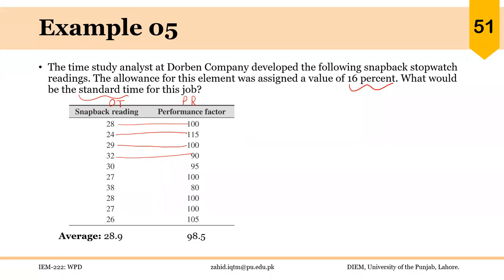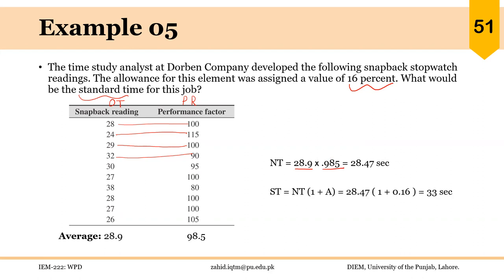We take the average of these snap-back readings, giving an average observed time of 28.9 seconds, and the average performance rating is 98.5%. Normal time is the product of average observed time and average rating, which turns out to be 28.47 seconds. With an allowance of 16%, the standard time equals normal time multiplied by (1 + 0.16), giving a standard time of 33 seconds — the time the worker should take on average to perform the task once.